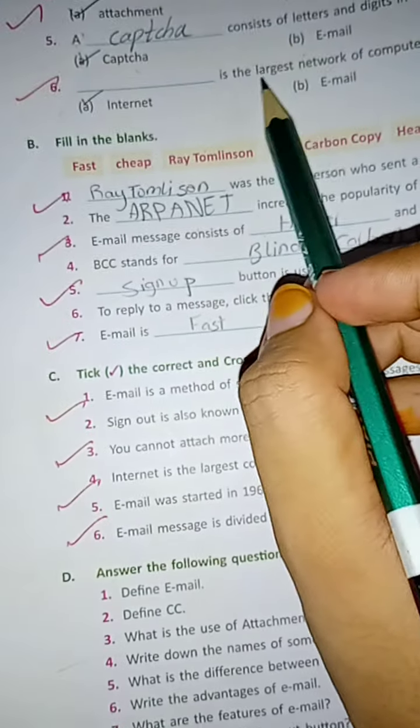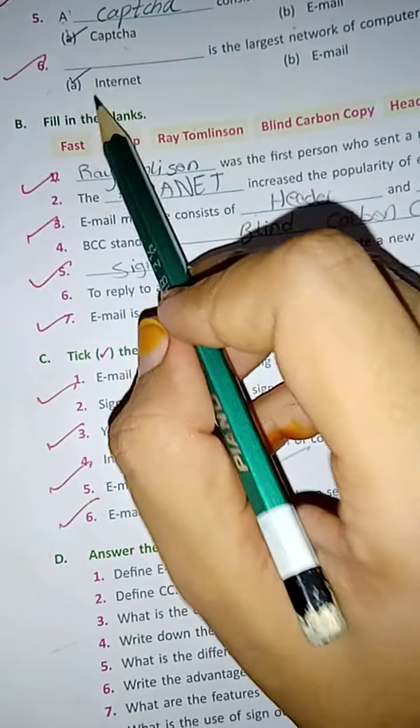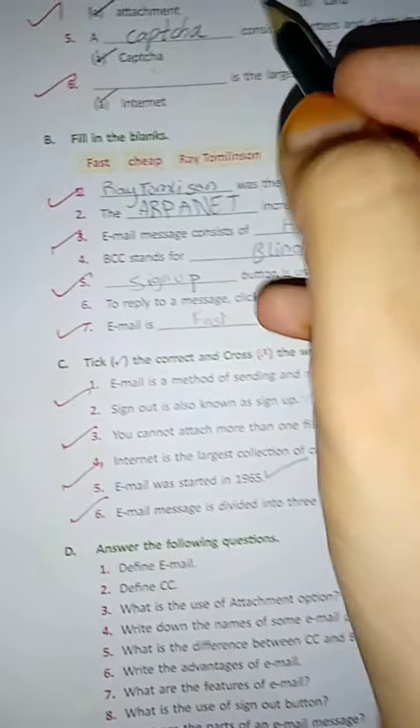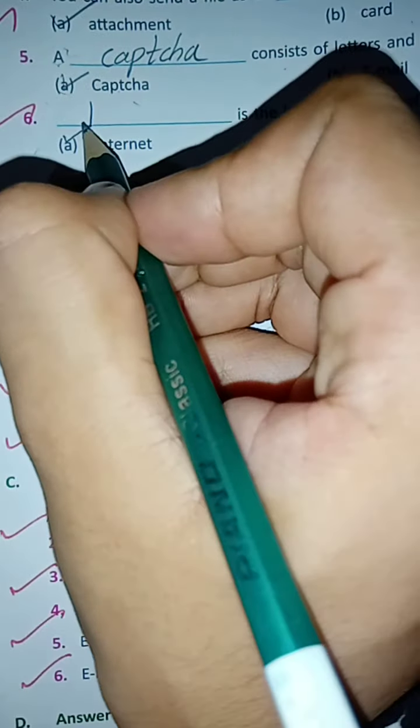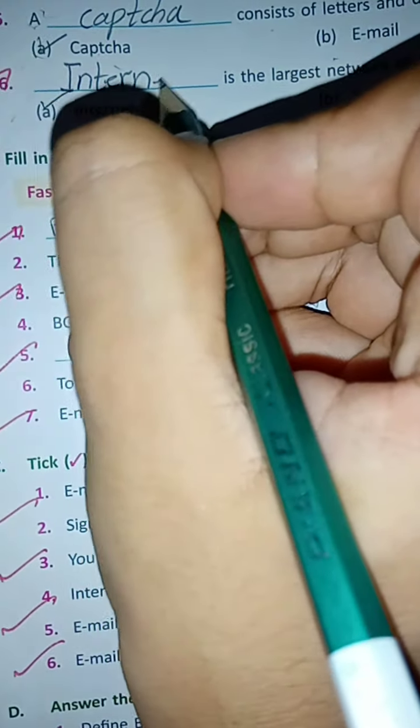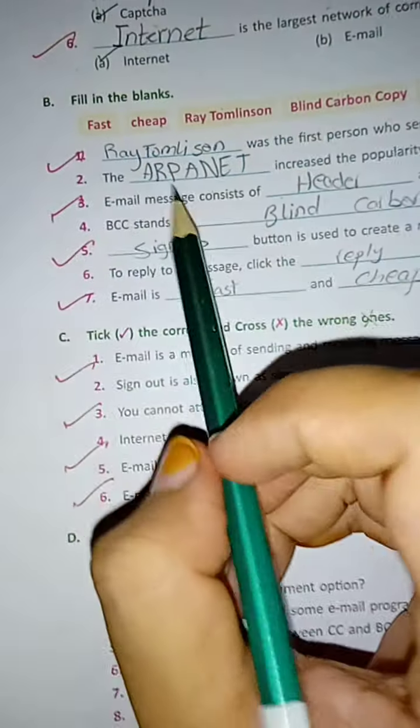Next, dash is the largest network of computers. Option A: internet, Option B: email, Option C: none of these. And the answer is option A, internet. Okay, next we have fill in the blanks.